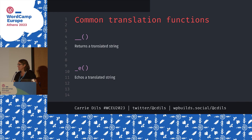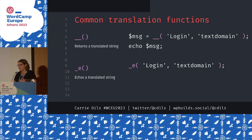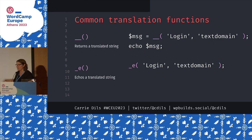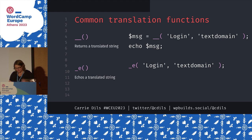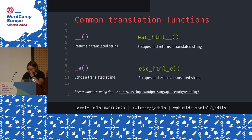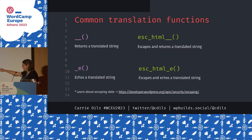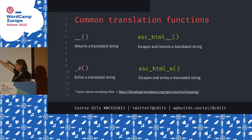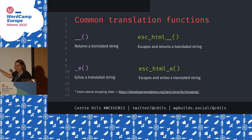The double underscore is the most commonly used translation function — it returns a translated string. Its sister function, the underscore-e, echoes a translated string. For example, with double underscore you might set the result to a variable and then echo it separately, whereas underscore-e prints the translated word directly to the page. When it comes to escaping data, there are special translation functions for that too: esc_html double underscore to return an escaped value, and its counterpart with underscore-e for echoing escaped output.